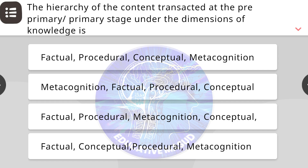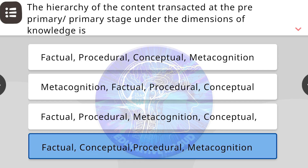The hierarchy of the content transacted at the pre-primary/primary stage under the dimension of knowledge is? Correct answer is: factual, conceptual, procedural, metacognition.